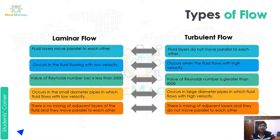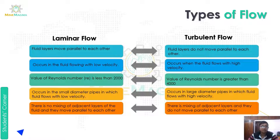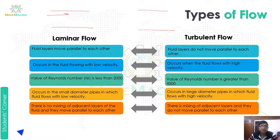Let us go to types of flow. Basically do types hote hain: ek laminar flow aur ek turbulent flow. Laminar flow ko draw karke samjhate hain — maanlijiye humara ek passage hai. Laminar flow mein jo fluid layers hain woh parallel travel karti hain ek doosre se, ek doosre se tukraati nahi hain.